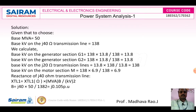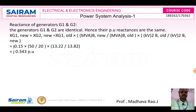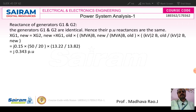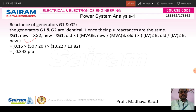For generators G1 and G2, since both ratings are the same, their new per-unit reactance values will also be the same. The standard formula is: new reactance = old reactance × (MVA_base_new / MVA_base_old) × (kV_base_old² / kV_base_new²). This same formula is used for transformers and motors as well.